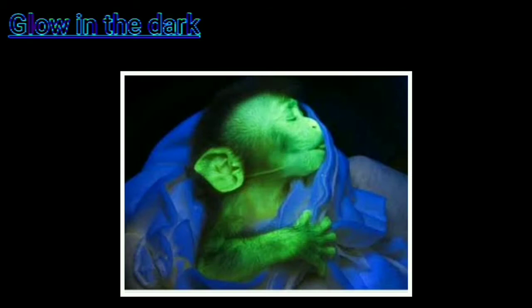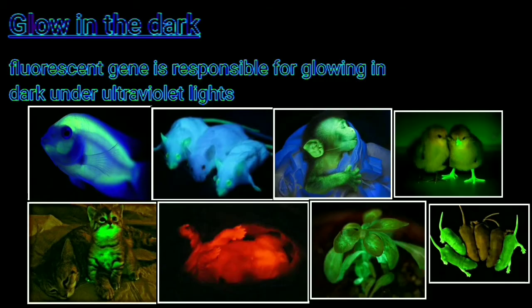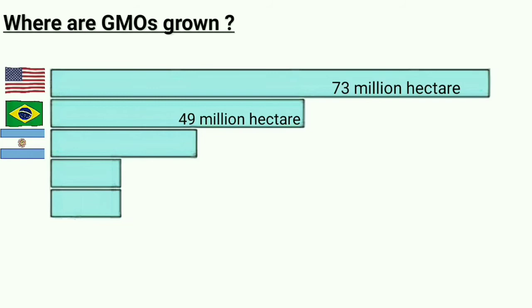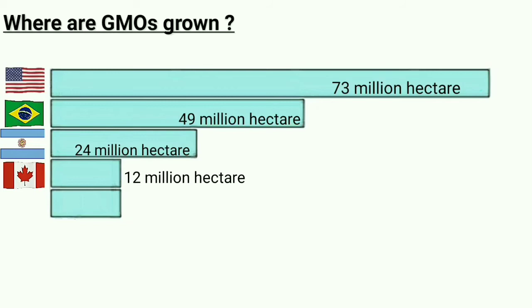Imagine everything just glowing in the dark — how awesome that would be! Where are GMOs grown? The USA planted the most GMO crops at 73 million hectares, followed by Brazil at 49 million hectares, Argentina at 24 million hectares, Canada at 12 million hectares, and India at 11 million hectares. These five countries make up 91% of the global area of GMO crops.